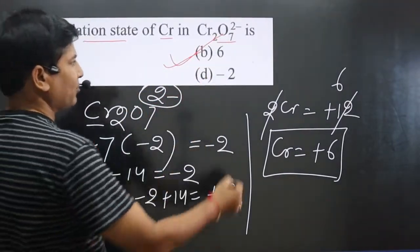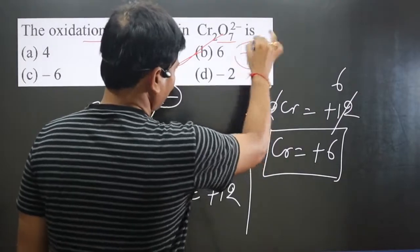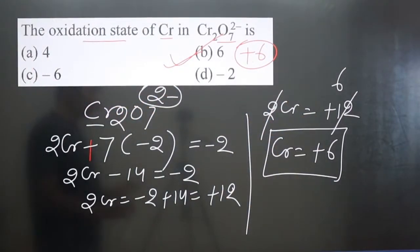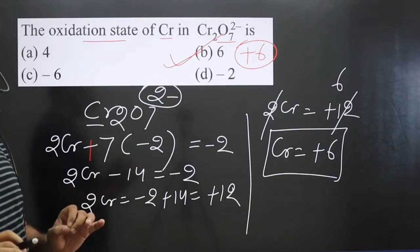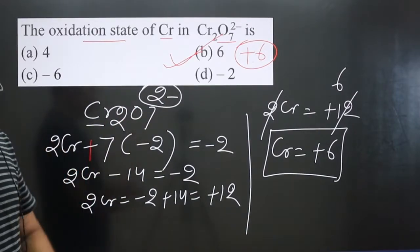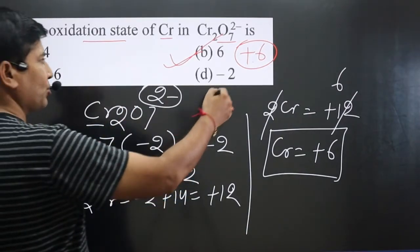In general, it should be mentioned as +6. In oxidation numbers, we always write the positive and negative sign before numbers except 0. That's why it is +6.